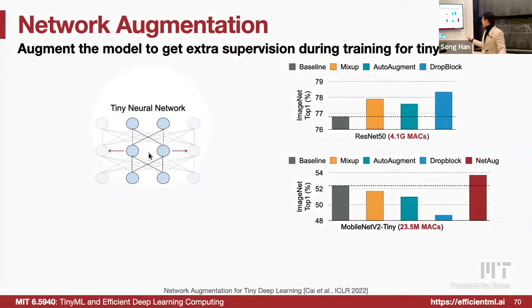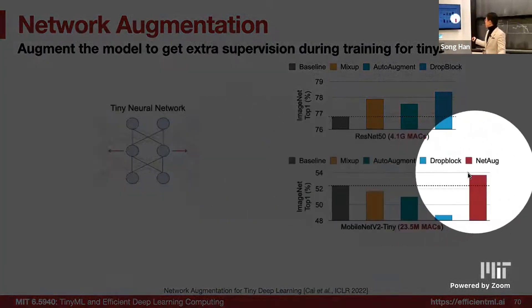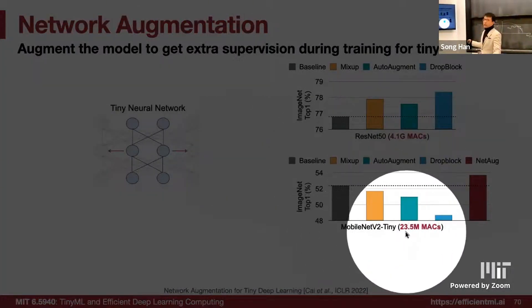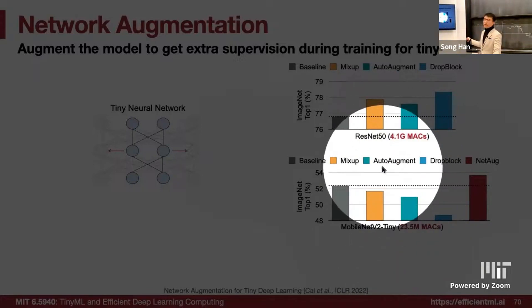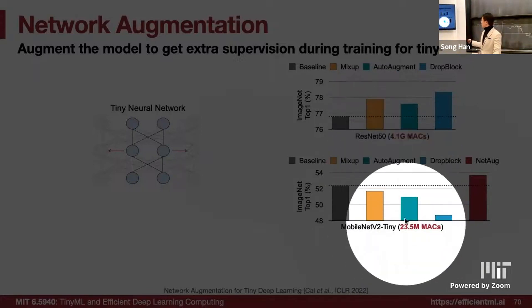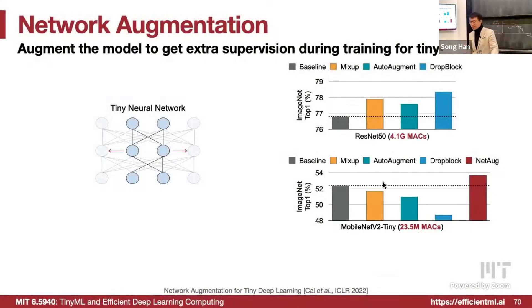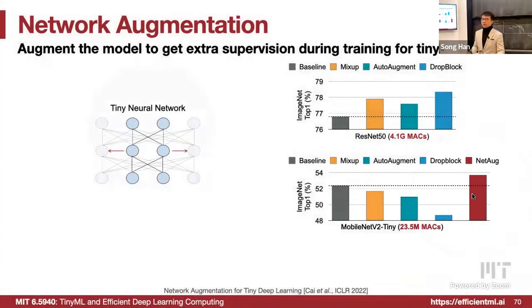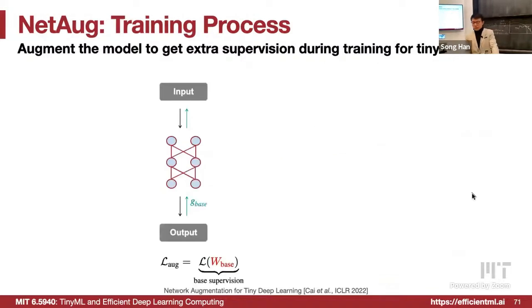Indeed, network augmentation for the tiny model — with only 23 mega-MACs versus 4 giga-MACs, two orders of magnitude difference — after adding network augmentation the accuracy finally improved. So how does that work?